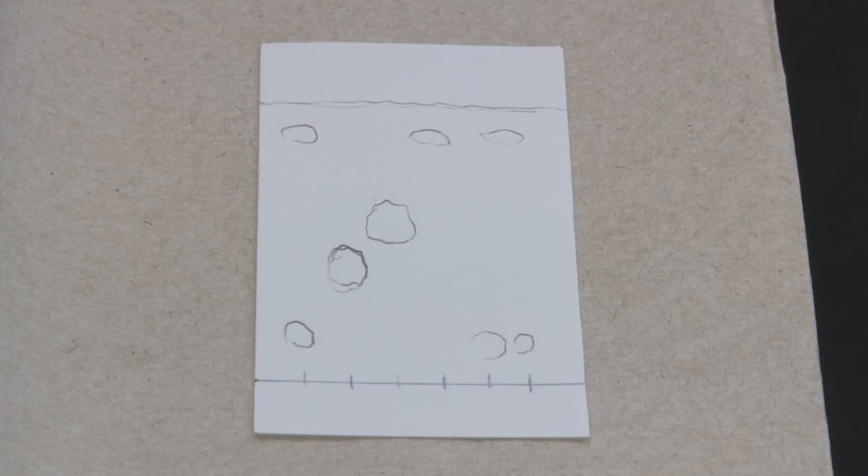Compare your unknown spots to the known spots. You should be able to match its components to the knowns based on how far they traveled. For instance, in this TLC plate, the unknown has two components which match the known samples in positions 4 and 5.